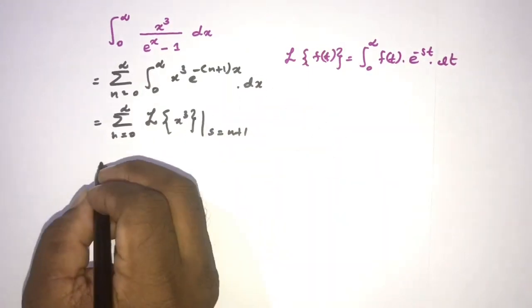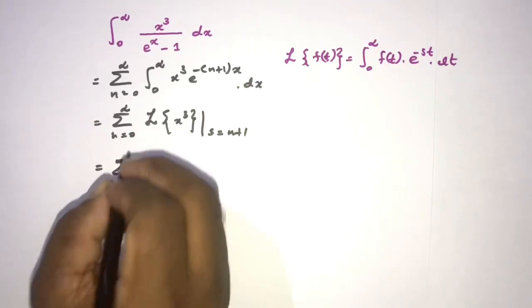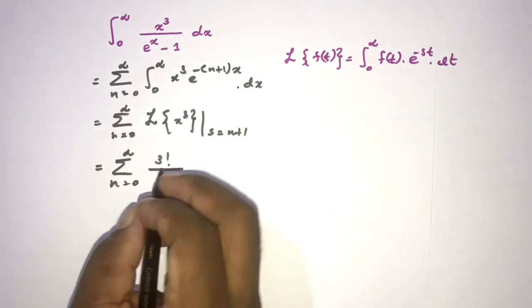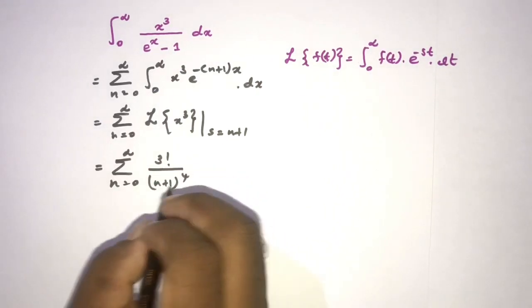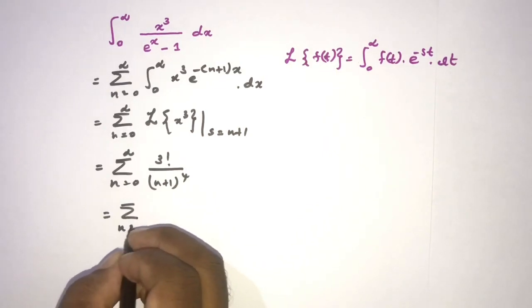Now we know Laplace transform of x to the third power is equal to 3 factorial over n plus 1 raised to the fourth power. Now we can shift the index, here n is equal...